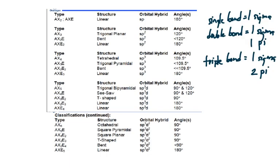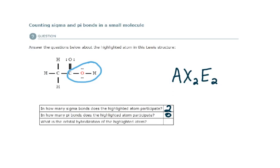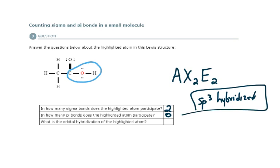Going to my list for AX₂E₂ — coming across — it must be sp3 hybridized. So the hybridization of this oxygen atom is sp3. If I look here I have one s orbital and three p orbitals hybridized together for a total of four orbitals, and I have four electron domains. So that makes sense.